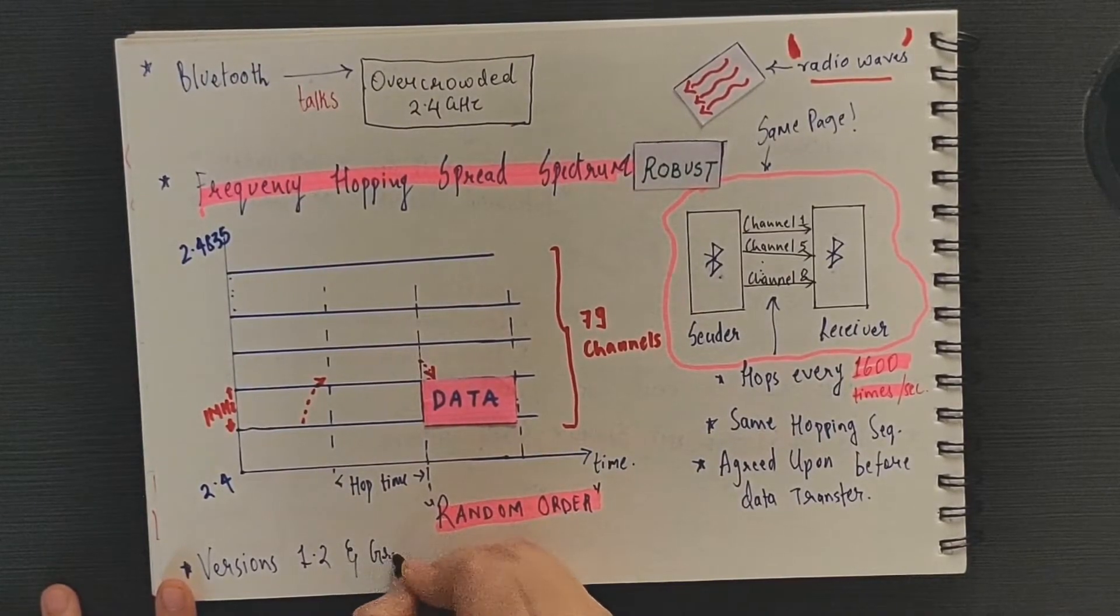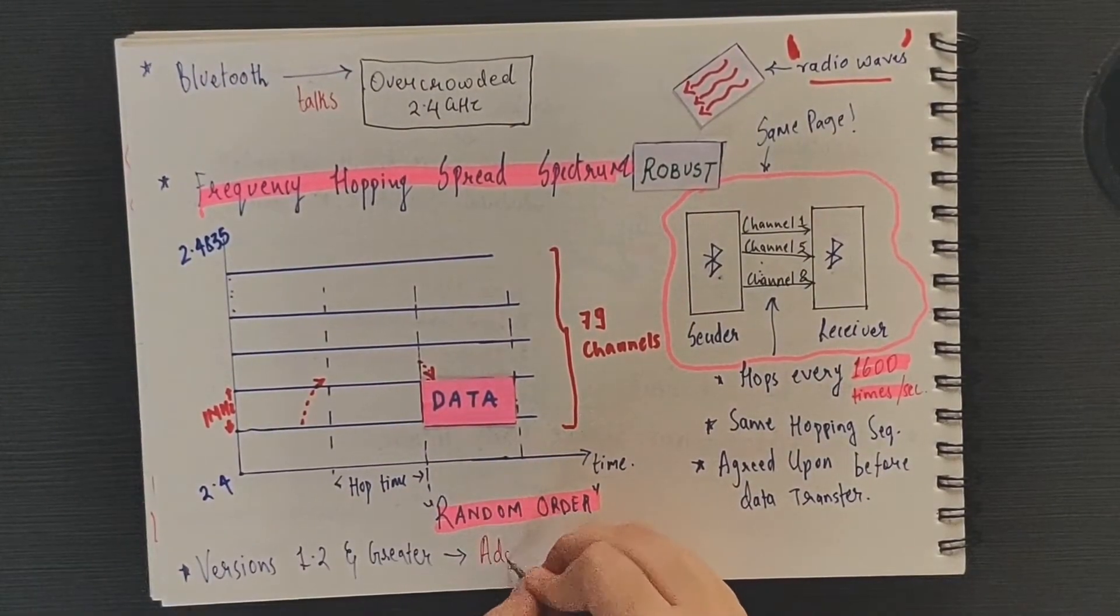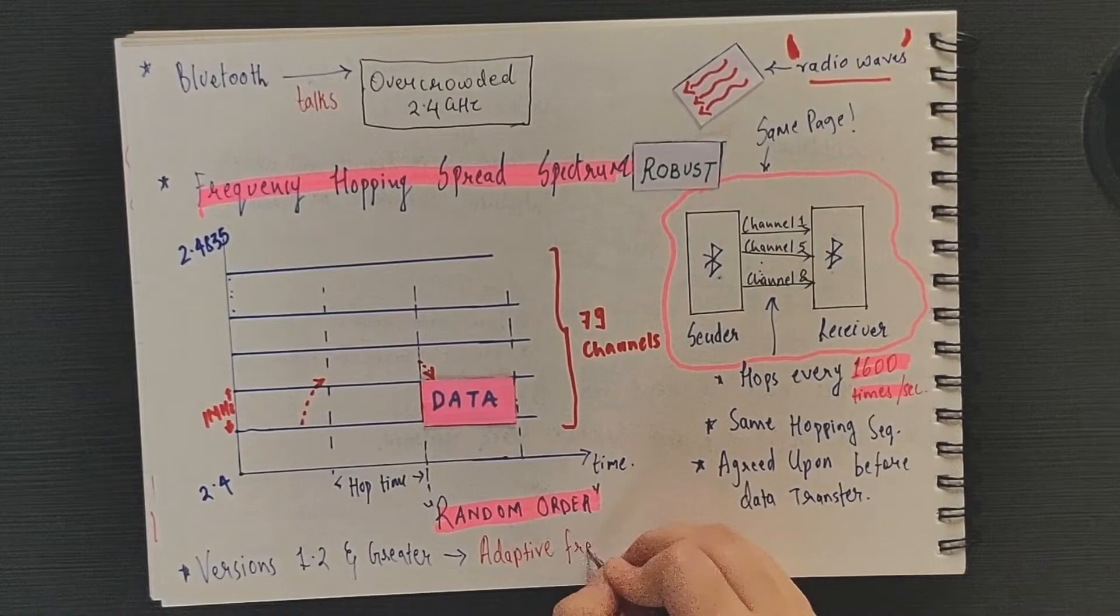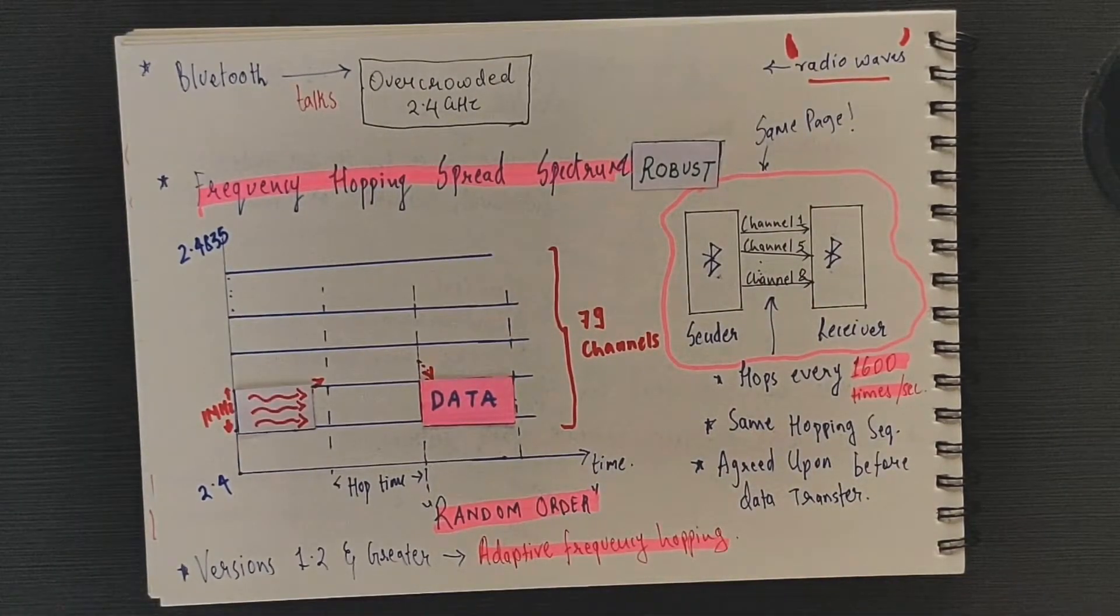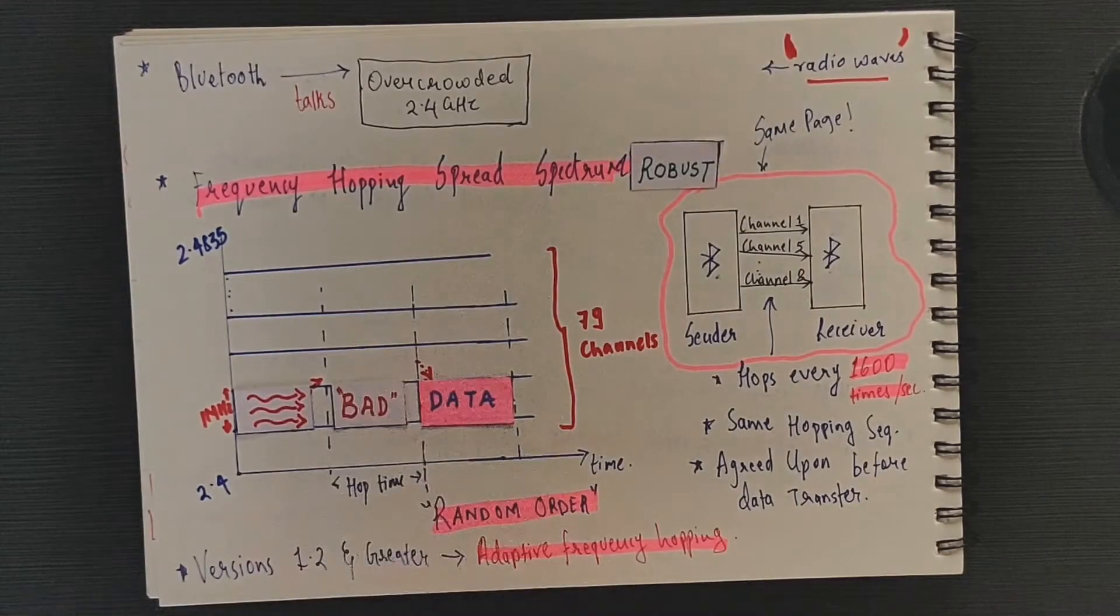Versions like 1.2 and greater reduce the effect of presence of any other network by using something called as adaptive frequency hopping method, which is even better. So the AFH identifies the channels where interferences are present, and marks these channels as bad channels.